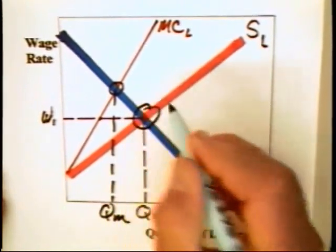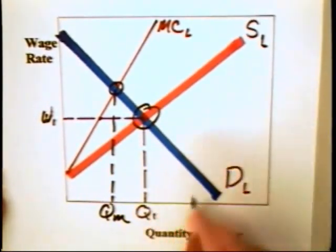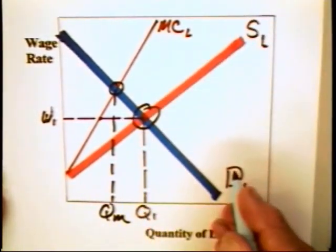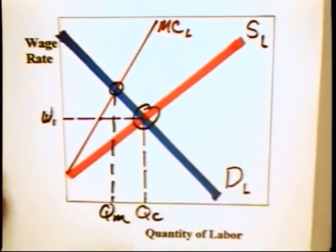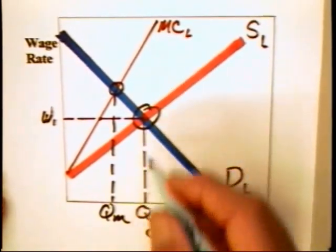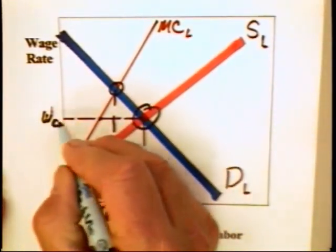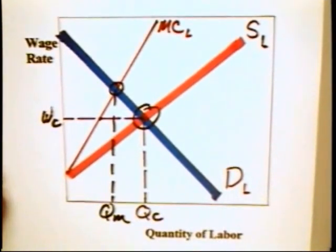We can note here that in a competitive labor market the wage will be determined by supply and demand, which means that the quantity of labor in a competitive labor market will be QC. It also means that the wage being paid in a competitive market will be WC.